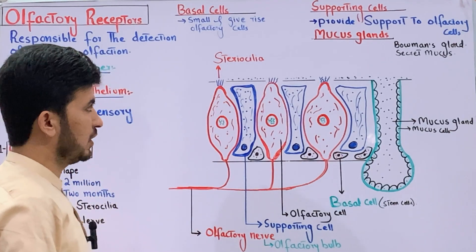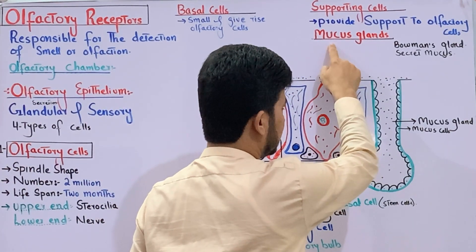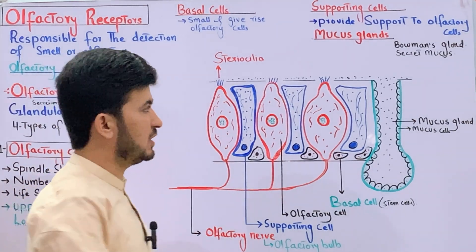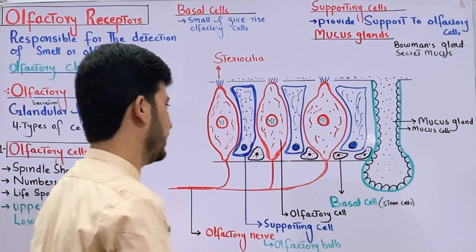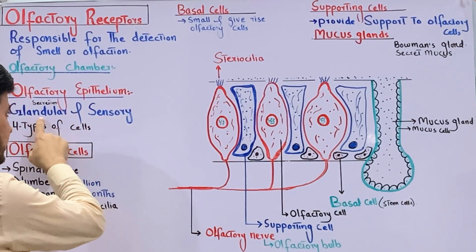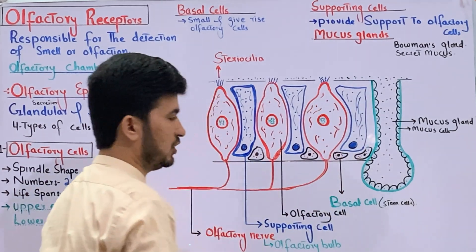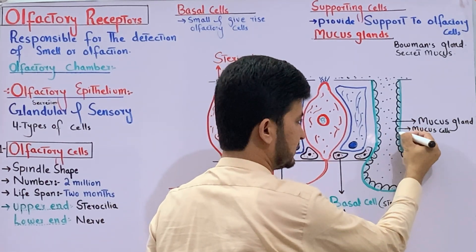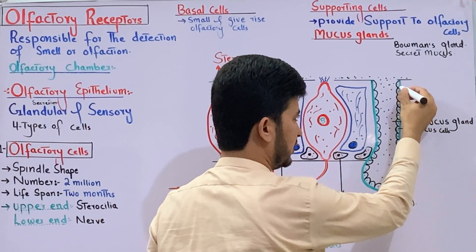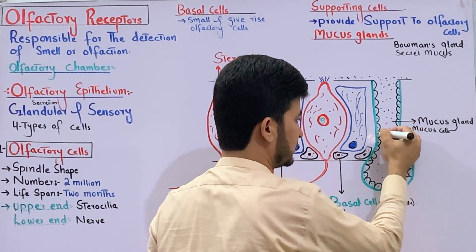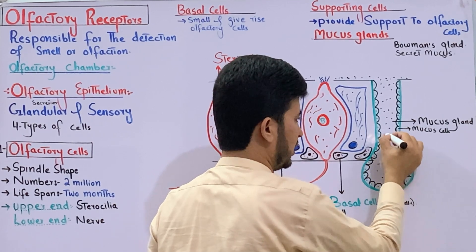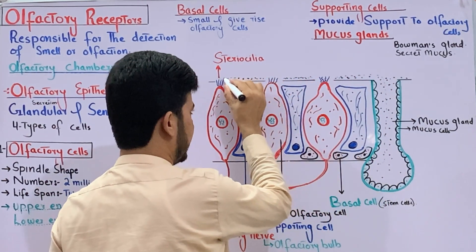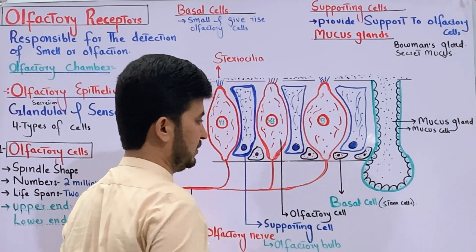The fourth type is mucous glands, also called Bowman's glands. Their function is mucus secretion — they secrete mucus over the membrane, that is, over the olfactory epithelium surface. This mucus covers the surface of the epithelium membrane.